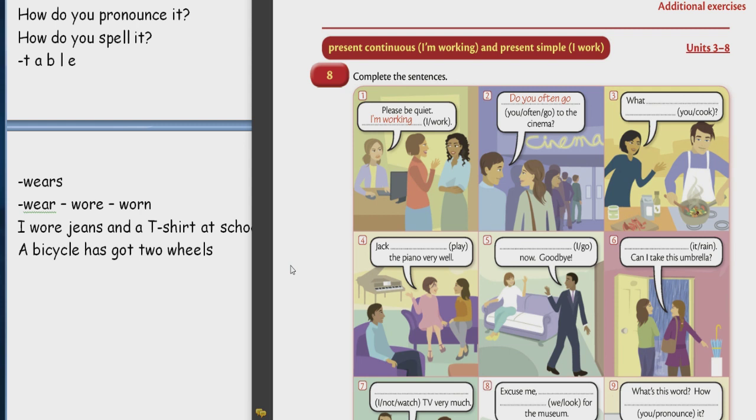Picture four. Jack plays the piano very well. Oh, yes. Jack plays the piano very well. What tense is it? Present simple. Present simple. Repeat. General information. General information. Translate general information. Общая? Общая информация. Общая информация. Не сказали с какой периодичностью. Просто общая информация.